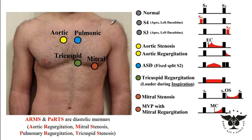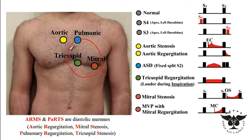Regarding murmur location — in which of the four auscultation points is the murmur loudest? If you have difficulty memorizing where each valve is located, imagine the heart's position. The aorta initially ascends and then descends into the abdomen, so aortic murmurs like aortic stenosis and aortic regurgitation are best heard at the right upper sternal border, versus pulmonic valve murmurs which are best heard at the left upper sternal border.